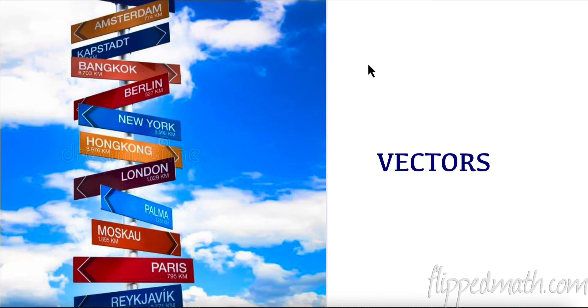Vectors are essentially things that have direction and they have a magnitude or like a size to it. Maybe you've seen one of these poles standing where they have directions at different locations.